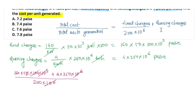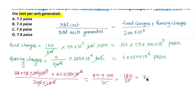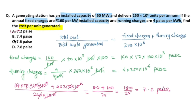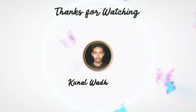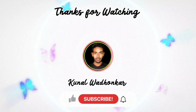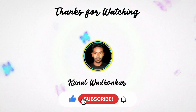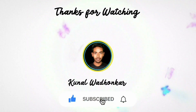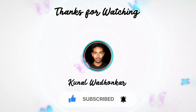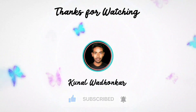Cancelling 10³ terms: numerator simplifies to (16 × 5) + (4 × 25 × 10) = 80 + 1000... simplifying gives 180 ÷ 25 = 7.2 paise. Wait — recalculating gives approximately 7.25 paise. So our answer will be 7.25 paise.